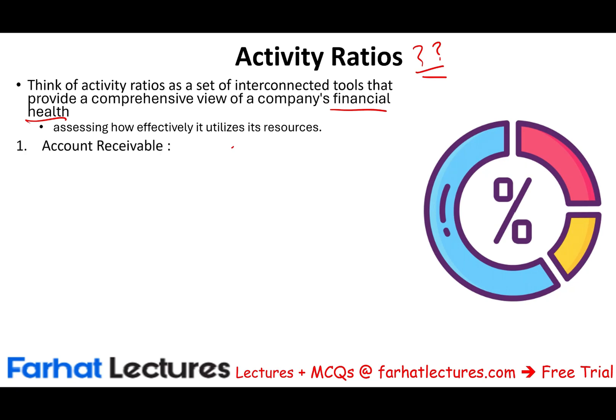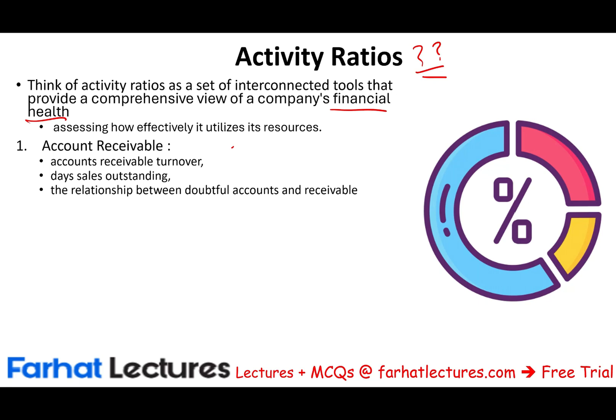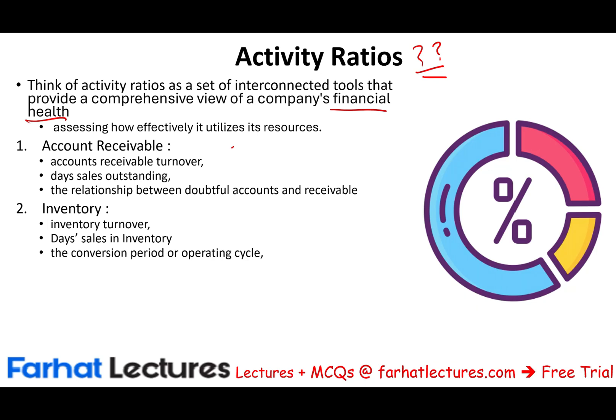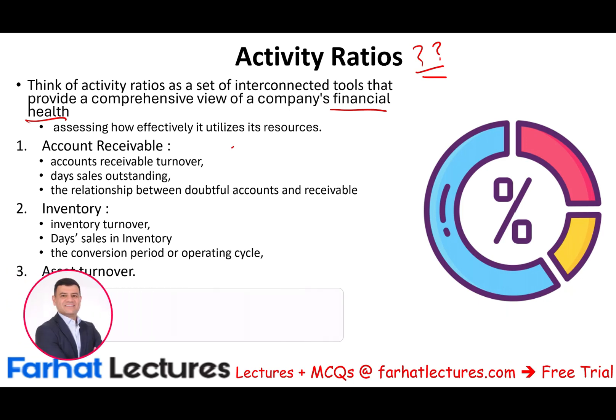We will break activity ratios into three categories. The first category covers accounts receivable ratios: accounts receivable turnover, days sales outstanding, and the relationship between doubtful accounts and receivable. The second group looks at inventory turnover, days sales in inventory, and the operating cycle. Then we look at total asset turnover as a ratio.